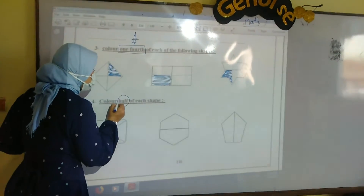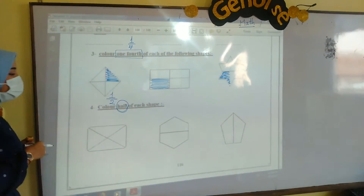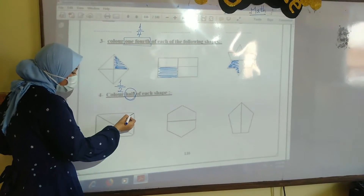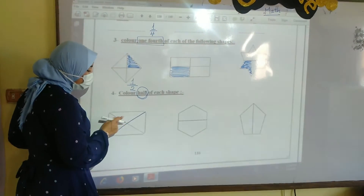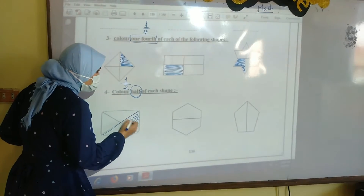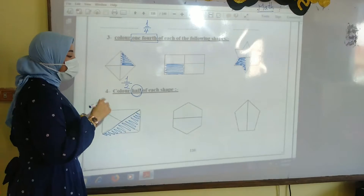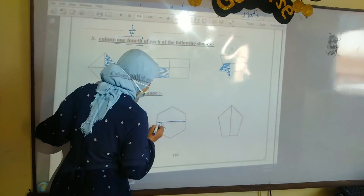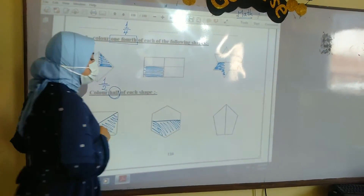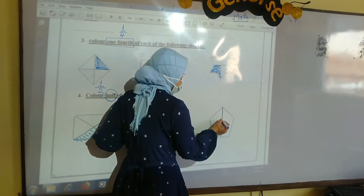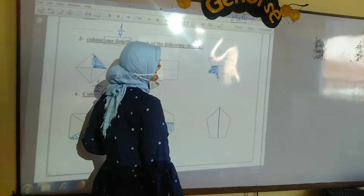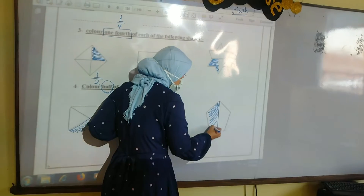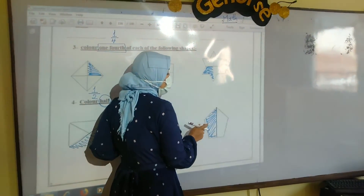Number 4, color half of each shape. Half means 1 over 2. So you need to divide these shapes into 2 equal parts. This shape, we can divide it like this into 2 equal parts, so color half of these shapes — you can choose any part you want, just 1 part. The second shape is divided into 2 equal parts, you can color just 1 part like this. The last shape is divided into 2 equal parts. You want to color 1 over 2 of this shape, so color just 1 part. It represents 1 over 2 or half.